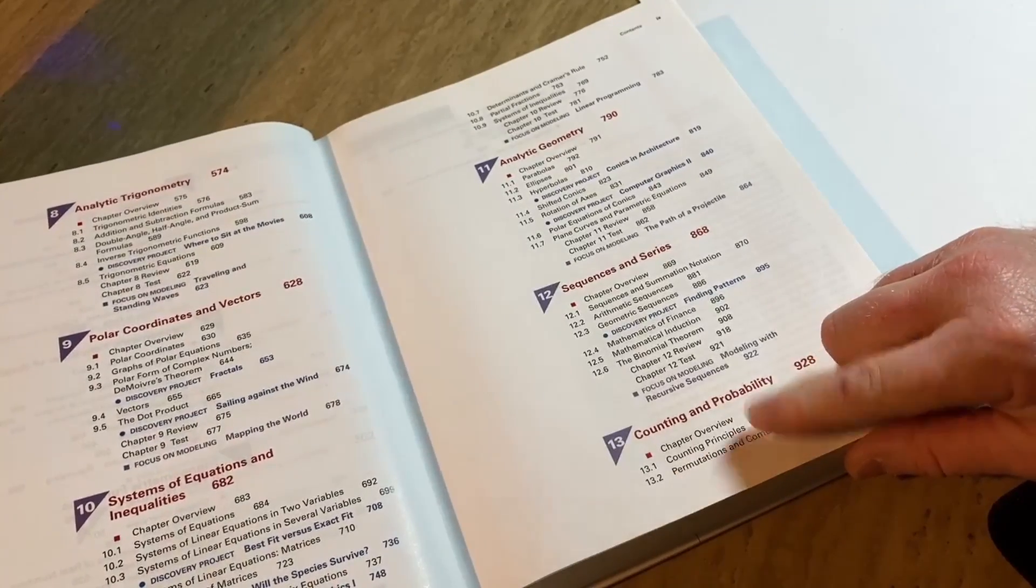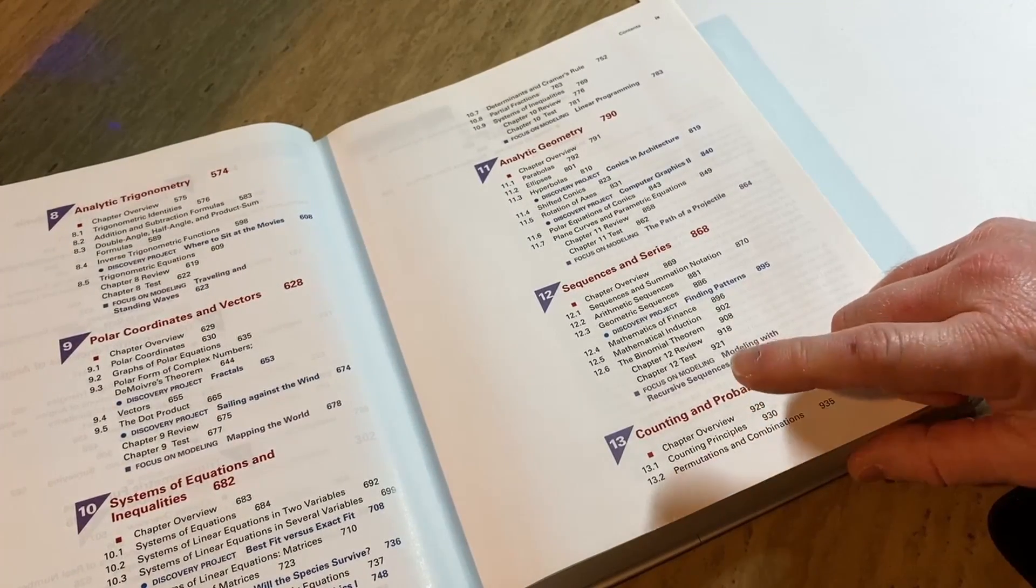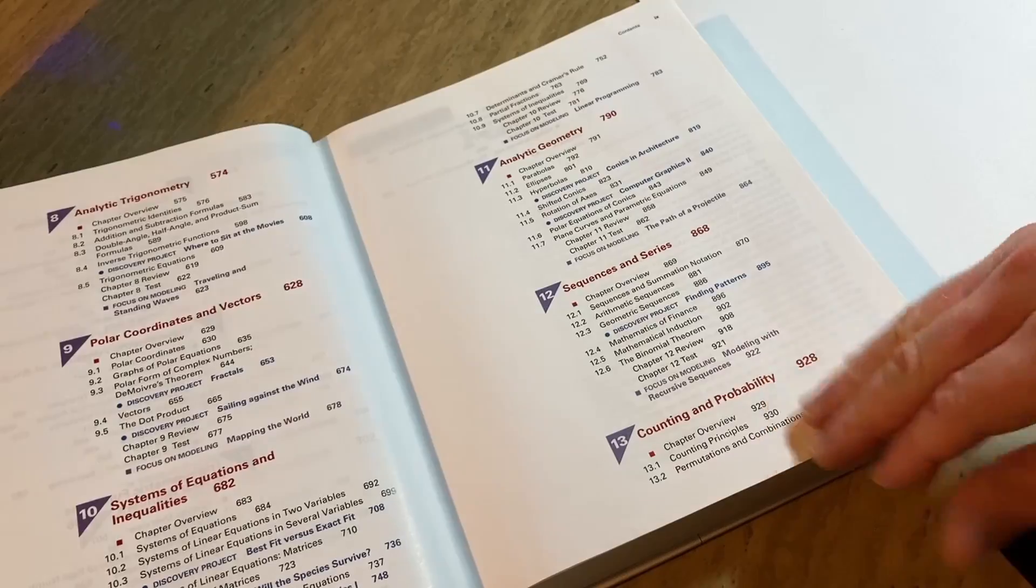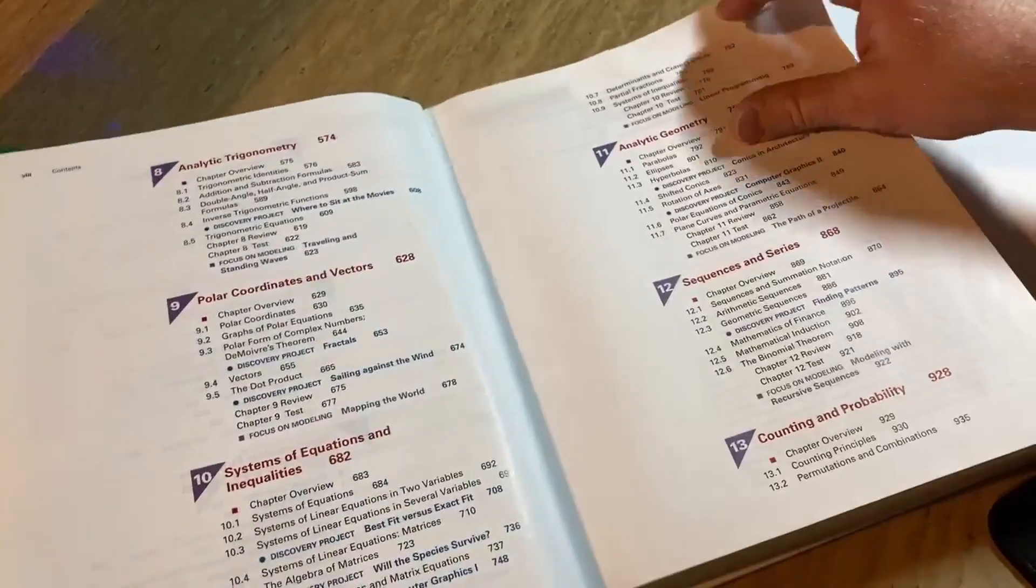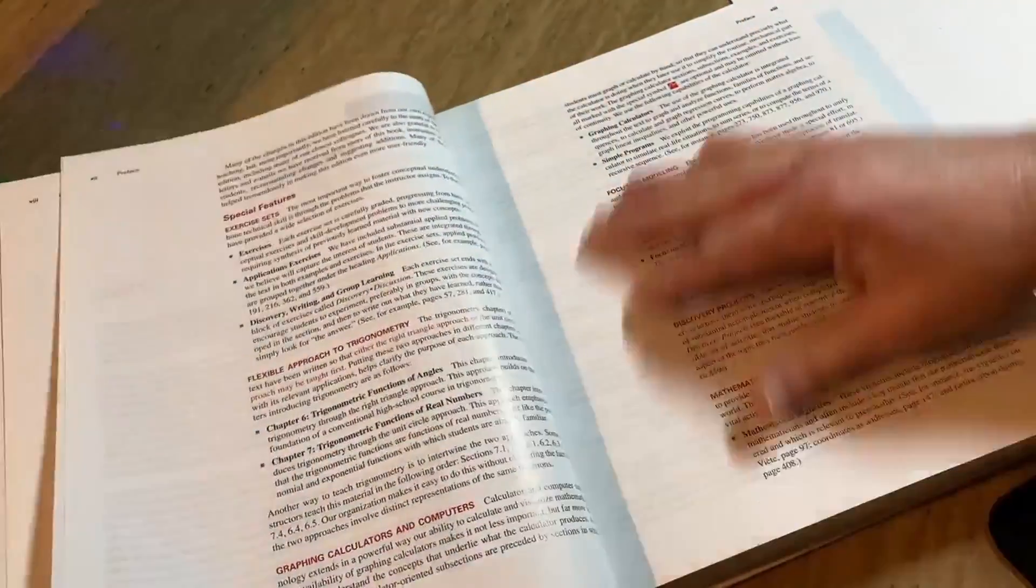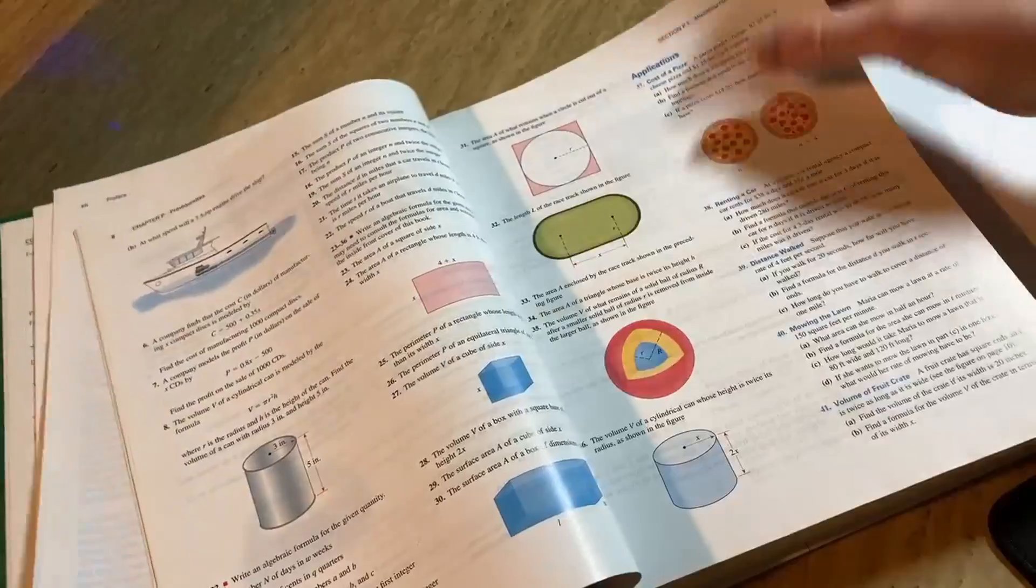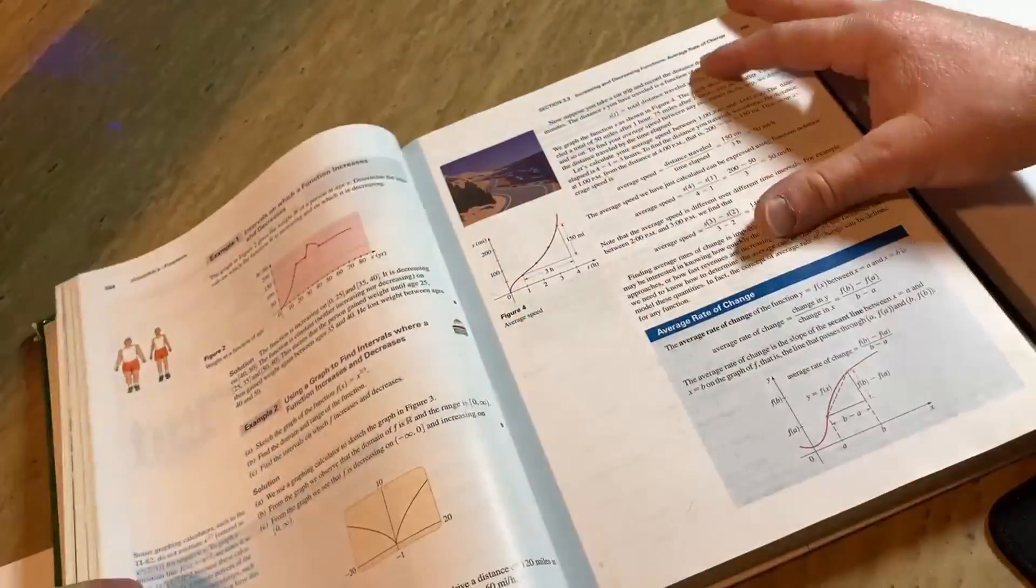This is a section that's not typically taught as much. Counting and probability might be a section that you don't normally see if you were to take a class in pre-calc or trig.